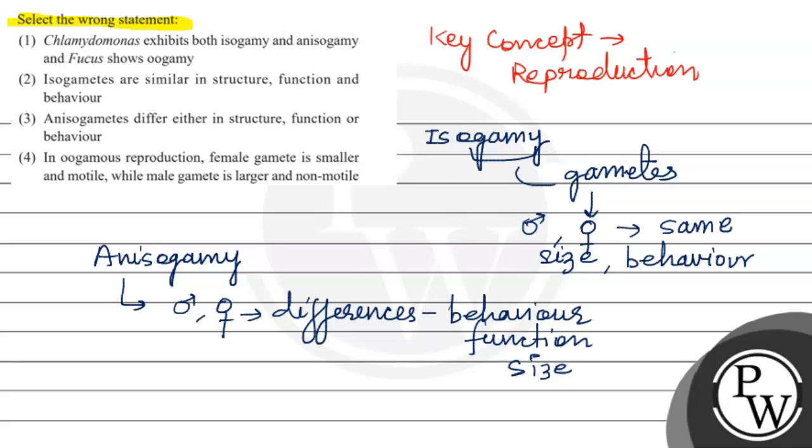The last is the oogamous type, which is the most important because we see it in higher organisms. Males are small and motile, whereas female gametes are non-motile, meaning they wait for male gametes, and they are comparatively larger than male gametes. So we call this oogamous type of gametes.